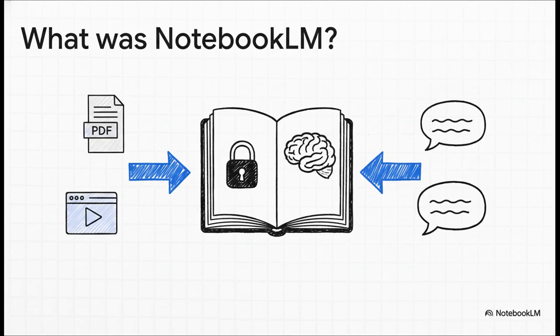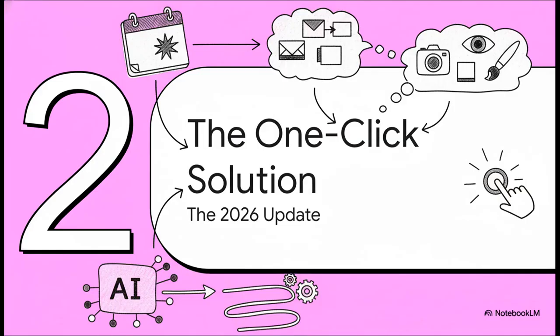You upload your own stuff - PDFs, notes, whatever - and the AI creates this little private world where it only answers questions based on your sources. It was amazing for getting summaries and asking questions, but it was all text. But then a recent update landed and well, everything changed.